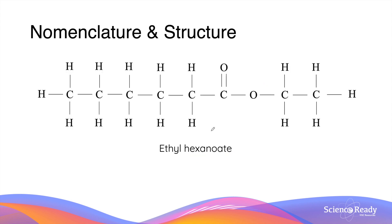For this much larger ester molecule, the naming convention still applies. We have two carbon atoms in the alcohol part and six carbon atoms in the carboxylic acid part of the molecule. So the name of this ester is ethyl hexanoate.